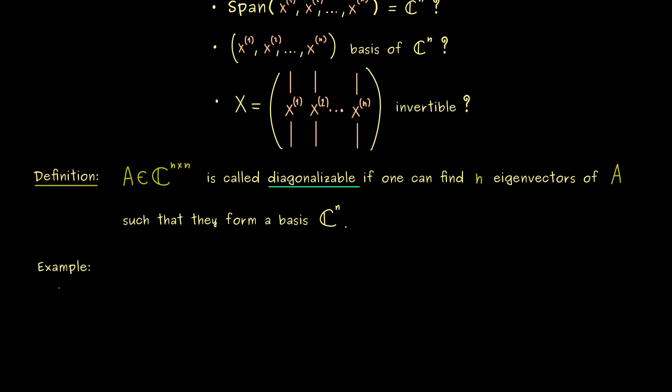Indeed, we already know that not every matrix is diagonalizable. However, let's first start with a positive example. And in fact, the easiest one would be a diagonal matrix. There we know that the canonical unit vectors are eigenvectors.